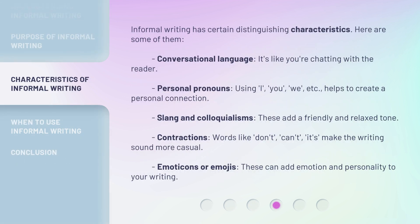Informal writing has certain distinguishing characteristics. Here are some of them. Conversational language — it's like you're chatting with the reader. Personal pronouns: using I, you, we, etc., helps to create a personal connection. Slang and colloquialisms add a friendly and relaxed tone. Contractions — words like don't, can't, it's — make the writing sound more casual. Emoticons or emojis can add emotion and personality to your writing.